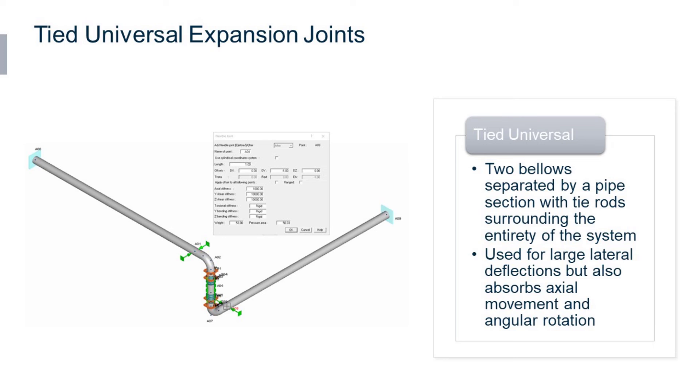A common application of a tied universal joint is its use in a z-bend. We saw this earlier but now we're seeing it with a tied universal expansion joint. We saw this with hinge joints and gimbal joints as well.